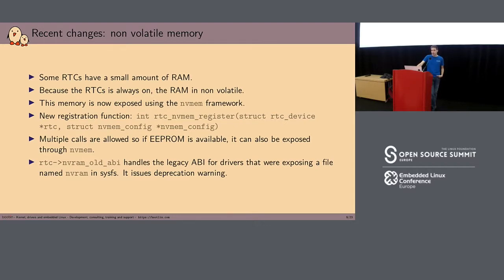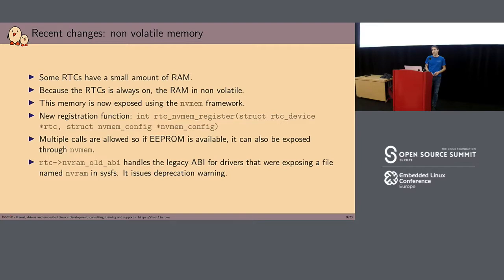Another change is non-volatile memory. Many RTCs have a small amount of RAM — sometimes it's only one bit, sometimes almost one megabyte. Because the RTC is always powered, even when your system is shut down, that RAM is non-volatile. That memory is now exposed using the NVMEM framework, which is really nice because you can access it from user space but also from kernel space. If you store something you need in the kernel, you can still retrieve data from there, which was not possible before.